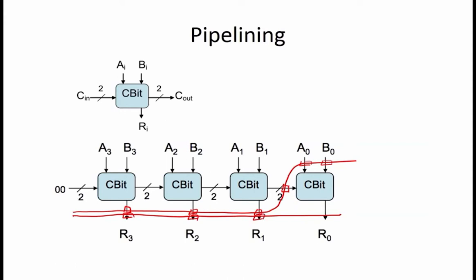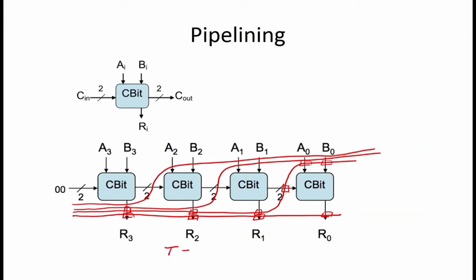We continue in this manner, isolating each C-bit module into its own pipeline stage. Now that each C-bit module has been placed into its own pipeline stage, we can clock this circuit for maximum throughput. Our clock period must allow for enough time for the propagation delay of the pipeline register, plus the propagation delay of the C-bit module, plus the setup time of the next pipeline register. Since our pipeline registers are ideal, the propagation delay and the setup time of the pipeline registers is zero. So the clock period is equal to the propagation delay of one C-bit module, which is 4 nanoseconds.